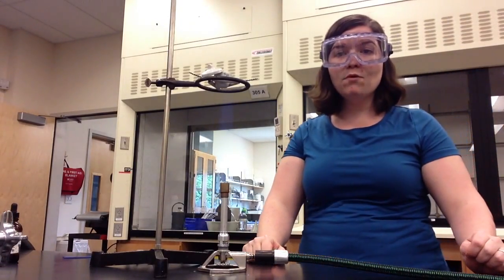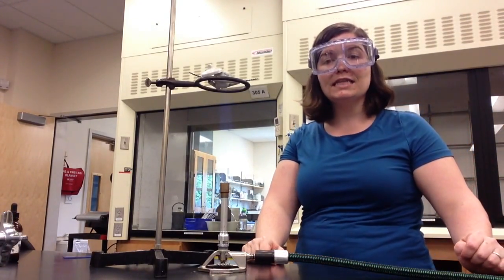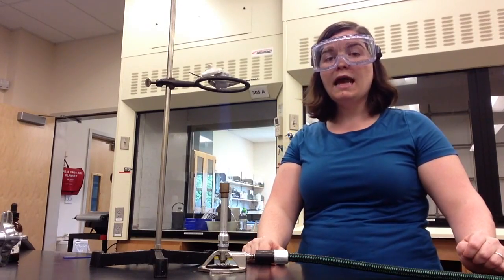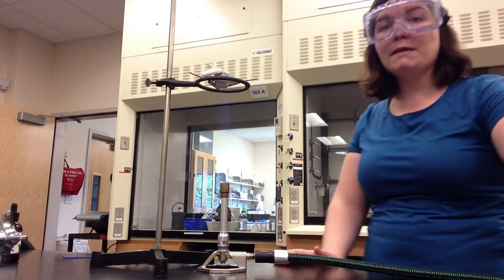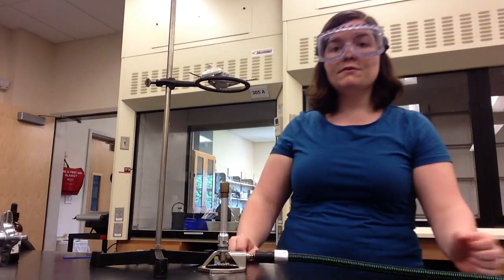I'm then going to heat strongly for 10 more minutes, which will allow the oxygen to leave the potassium chlorate. At the end of 10 minutes, I'll turn my Bunsen burner off. I'll then allow the crucible to cool, measure and record the mass in my data table.